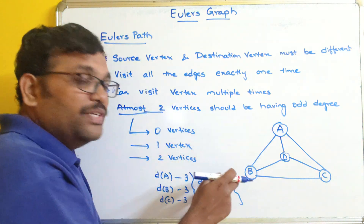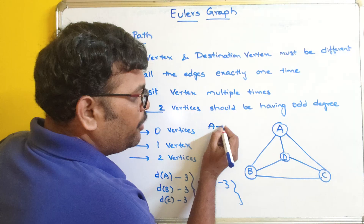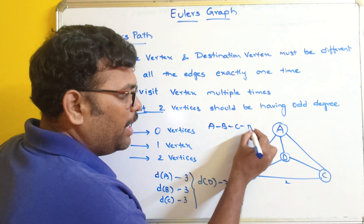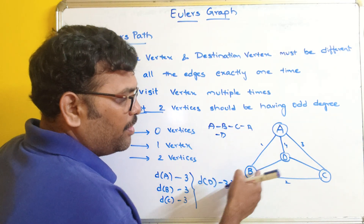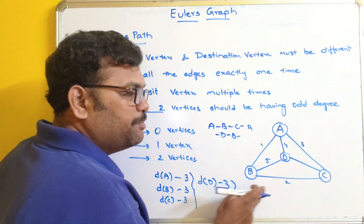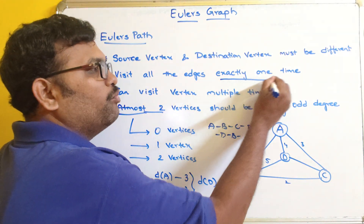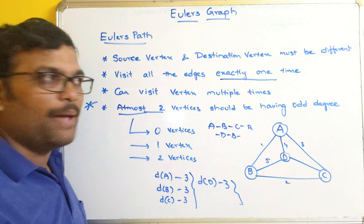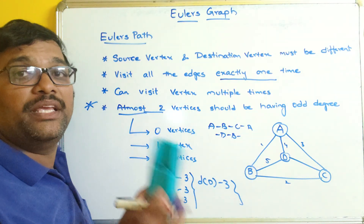Euler's path means visiting the edges exactly once. You can start from A: A to B — this edge completed; B to C — this edge completed; C to A — this edge completed; A to D — this edge completed. Next D to B — this edge completed. And one edge was not completed. You can't visit B to C or B to D one more time because we should not visit the edges multiple times. By observing the degree for each and every vertex of the graph, you can know whether there can be an Euler's path or not.